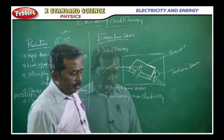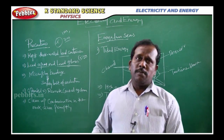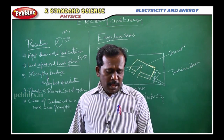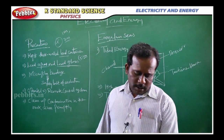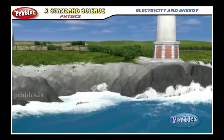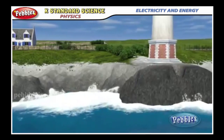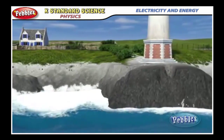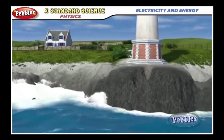The tidal energy is due to the gravitational pull of mainly the moon on the spinning Earth. The level of the water in the sea rises and falls, because at that time particularly the level is increased.